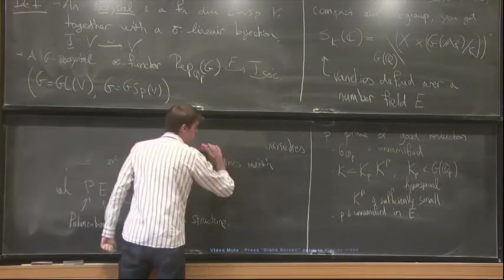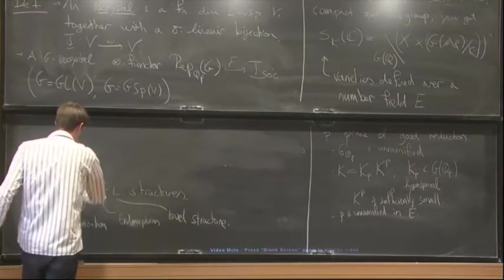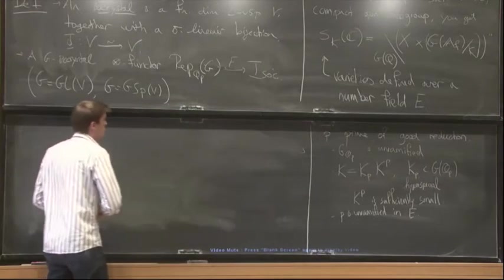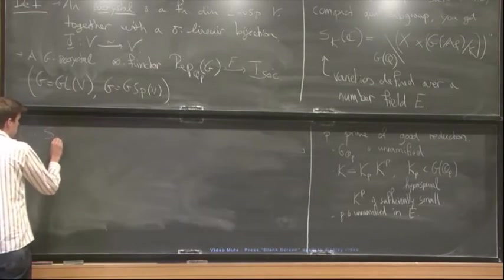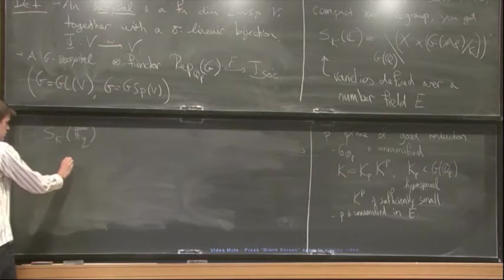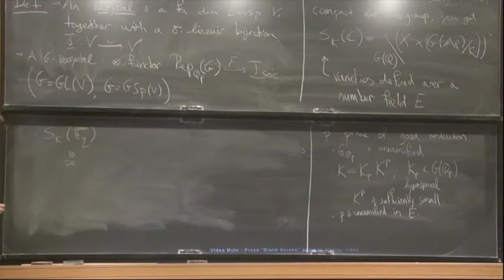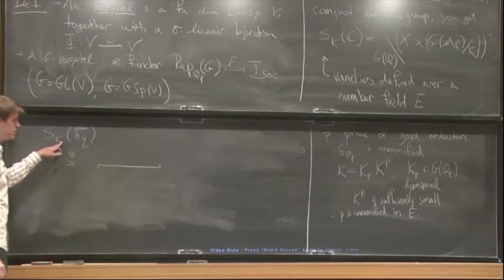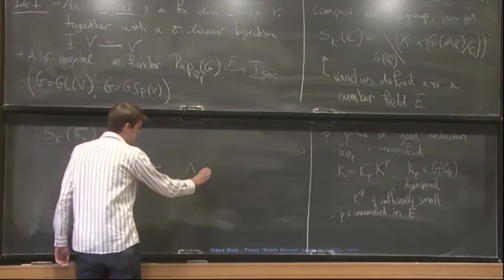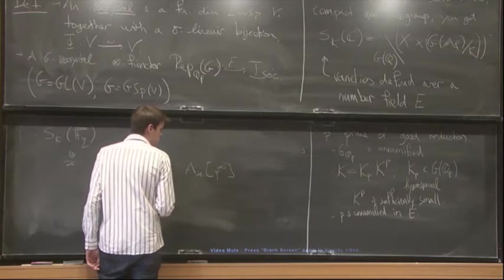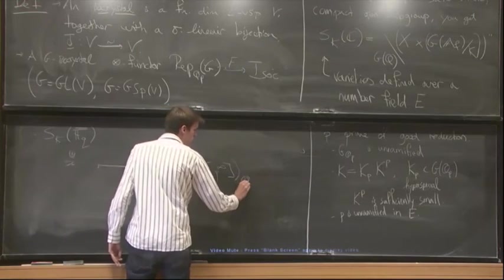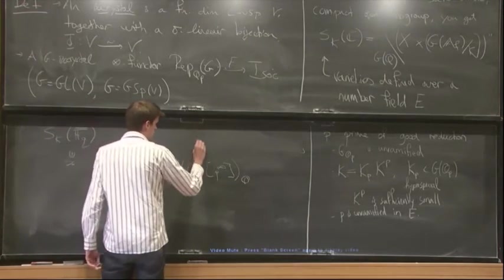So the point of introducing isocrystals is that the points on the Shimura variety modulo P, they give naturally isocrystals. So how does that work? So you take FQ bar points of SK, and you consider a little point x in here. And then this variety, it's a moduli space, so corresponding to x, there is an abelian variety. And of this abelian variety, I can take the P divisible group. And of that P divisible group, I can take the Dieudonne module, tensored with Q. And that gives me an isocrystal.